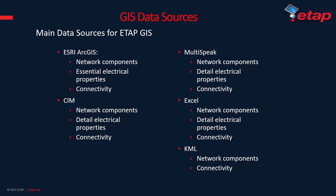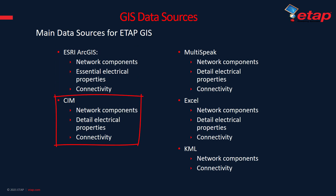The main data sources for ETAP GIS are ESRI ArcGIS and CIM, which is a common data model language for information exchange in the electrical utility industry. It also supports the IEC 61970 and IEC 61968 standards.